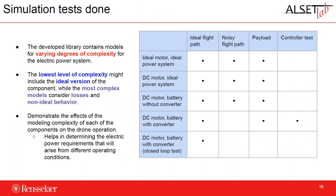We studied the system for varying degrees of complexity, focusing mostly on the electric power system. The lowest level of complexity is the ideal version — ideal motor with ideal power system, meaning no battery and infinite access to voltage and current. The most complex models consider losses and non-ideal behavior. We want to demonstrate the effects of modeling complexity on drone operation to help determine electric power requirements under different operating conditions. Specifically, we compare: ideal motor with ideal power system, DC motor with ideal power system, DC motor with battery but without converter, and DC motor with converter, plus a closed-loop stability test.